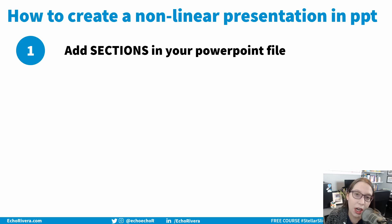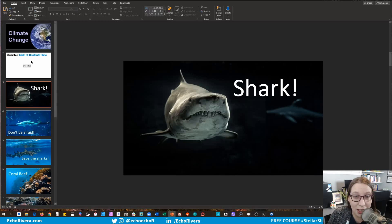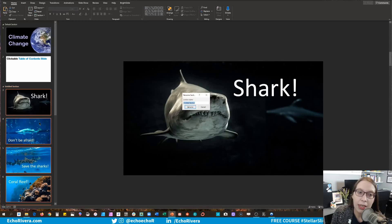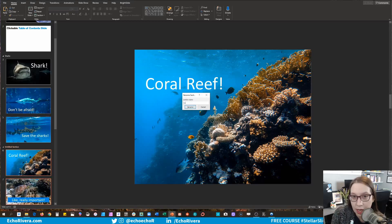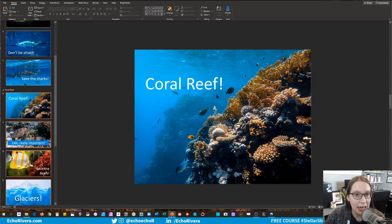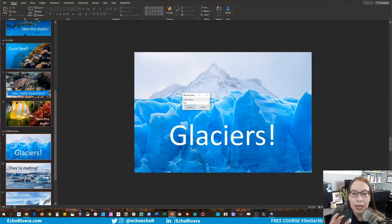The first thing you're going to do for your non-linear presentation is add sections in your PowerPoint file, and make sure the first slide in that section is highly engaging, highly visual, and makes it clear what that section is going to be. You go to the first slide, right-click it, click Add Section, and then name it. In this case, I'm going to name it 'sharks.' Then you repeat that — go to the first slide of the next section, right-click, add section, rename it. I'll do that again for glaciers, rename that to 'glaciers,' and that's done.